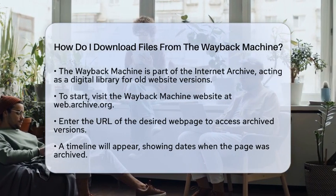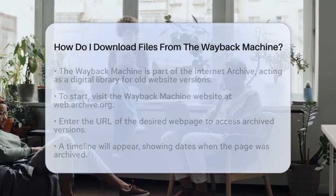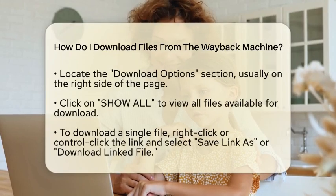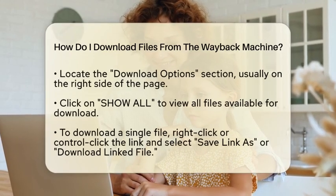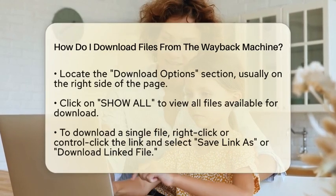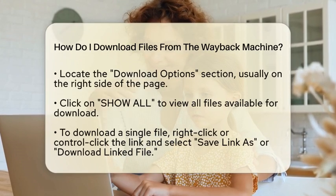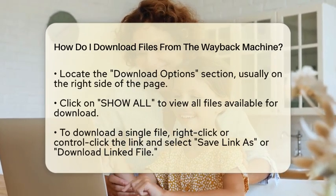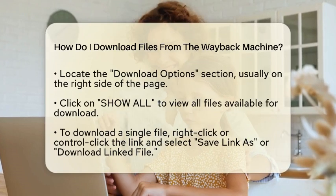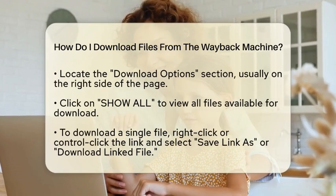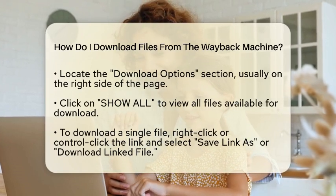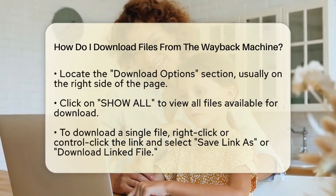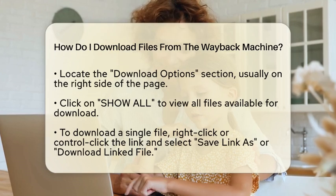After you find the archived web page you are interested in, look for the Download Options section. This is usually located on the right side of the page. Here, you will find various options for downloading files. If you want to download a single file, click on the Show All link in the Download Options section.